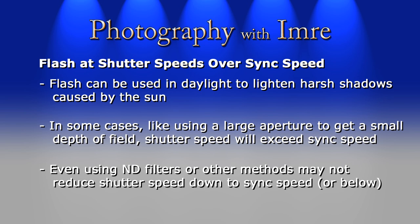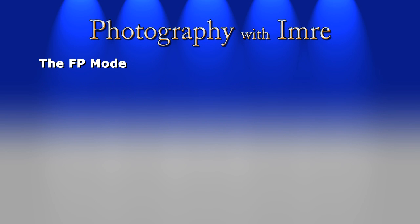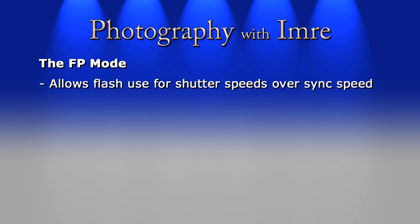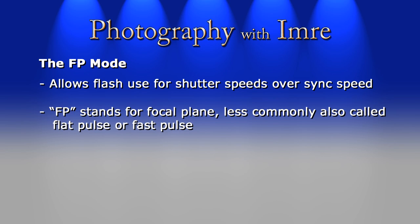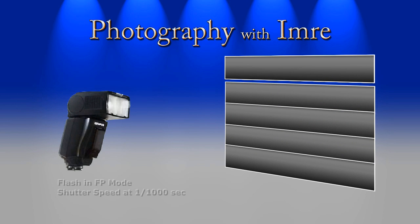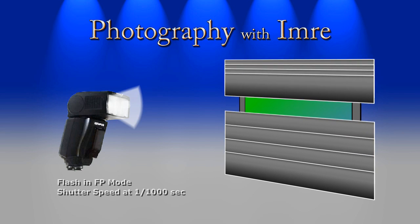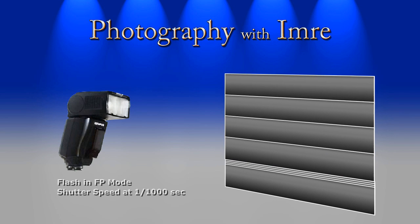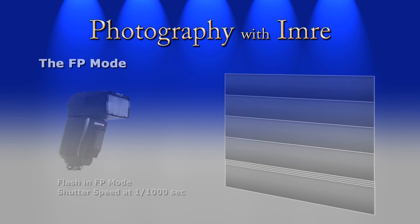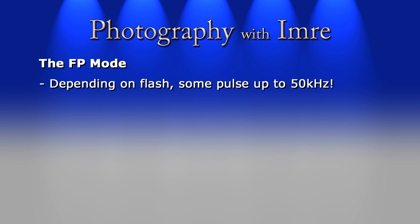If you have a flash that supports what most manufacturers call FP mode, you may be in luck. According to the majority of sources I've researched, FP stands for focal plane, though less commonly I've also seen 'flat pulse' and 'fast pulse' used. When using FP mode, the flash fires off in very rapid succession as your camera takes a picture, in order to illuminate the sensor as evenly as possible as the slit formed by the first and second curtains passes in front of the sensor. I found some references pointing to firing rates as fast as 50 kilohertz — that's 50,000 times a second.